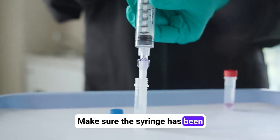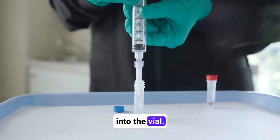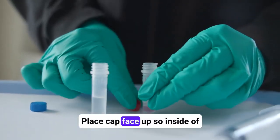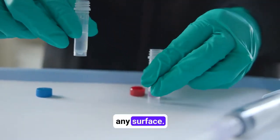Make sure the syringe has been completely emptied into the vial. Remove the cap of the test vial with the pink liquid. Place cap face up so inside of cap does not contact any surface.